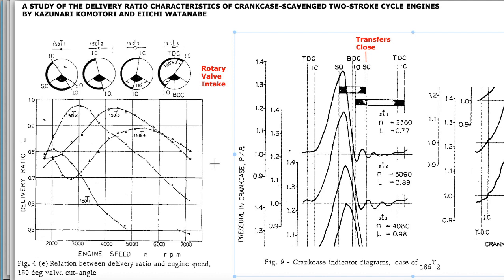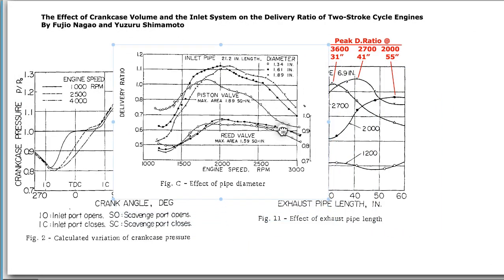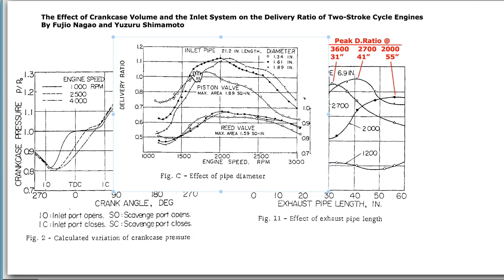As a side note, these papers also show the advantage of a reed valve. With different rotary valve setups, the peak delivery ratio happens at different engine RPMs depending on their setup, and the graph is quite peaky. Piston port intake is a little flatter at the top than rotary valve, but reed valve is the flattest — that's the best.